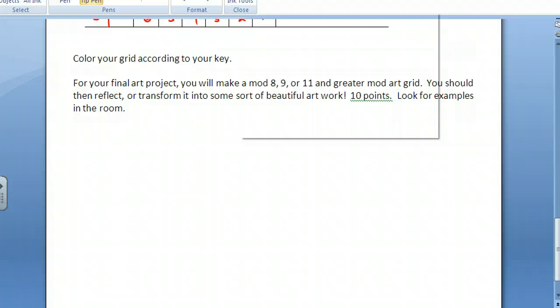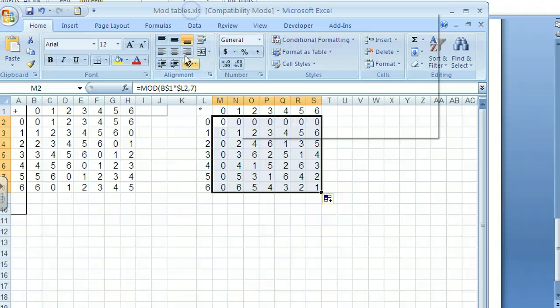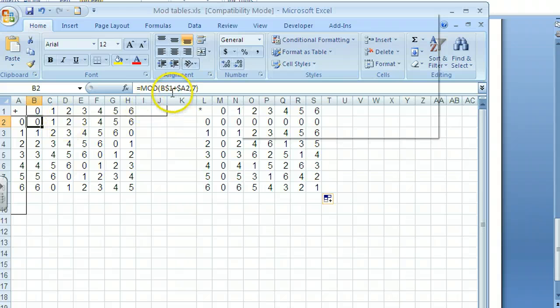And one last thing to show you is that you can also use the spreadsheet. And with the spreadsheet, you can just program it with a mod. And so, for instance, this cell right here would be B1 plus A2 and then comma 7. The 7 would mean that I'm doing mod 7. So if you want to do that in a spreadsheet and print that out, that's another way to do it as well. But at some point in time, you have to do these by hand and figure out where these numbers come from.